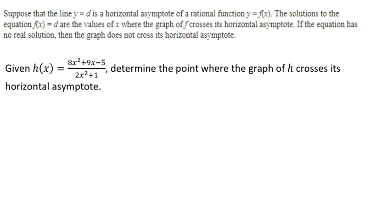The solutions to the equation f(x) equals d are the values of x where the graph of f crosses its horizontal asymptote. Now if the equation has no real solution, then the graph does not cross its horizontal asymptote. Let's take a look at an example.